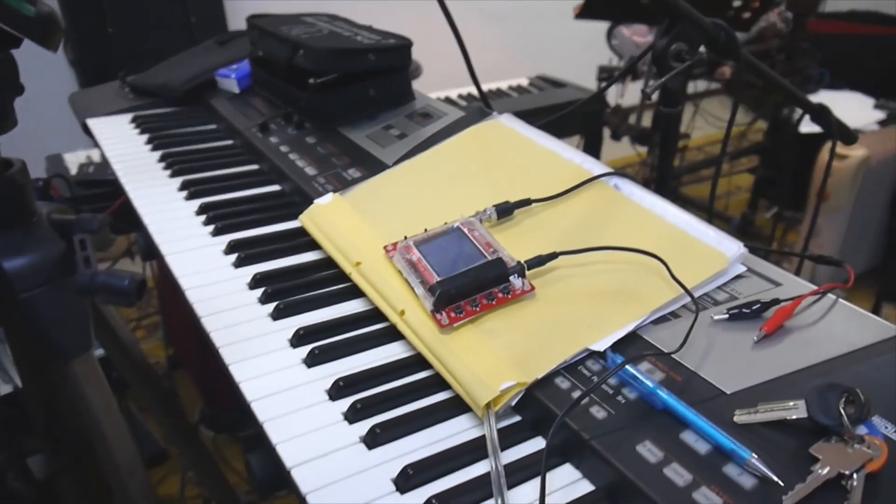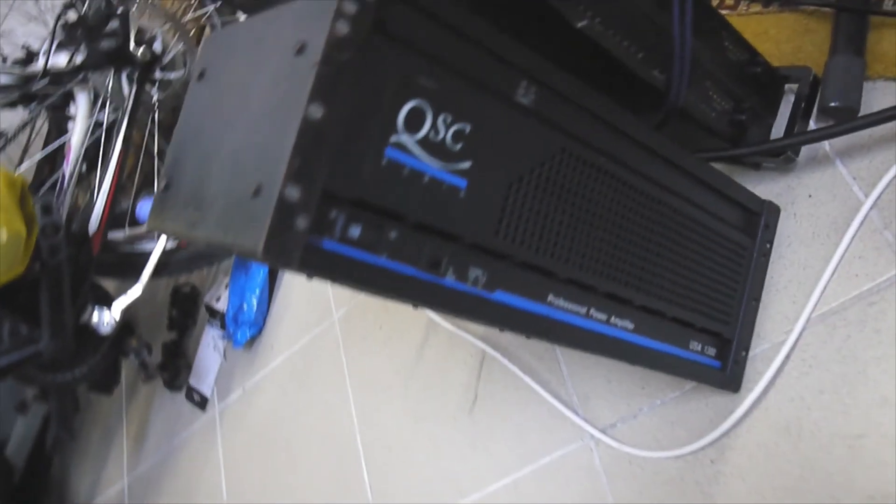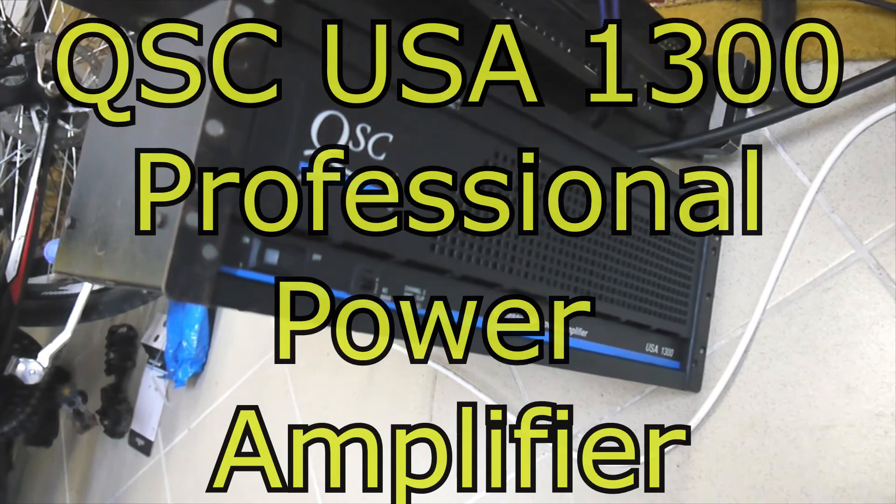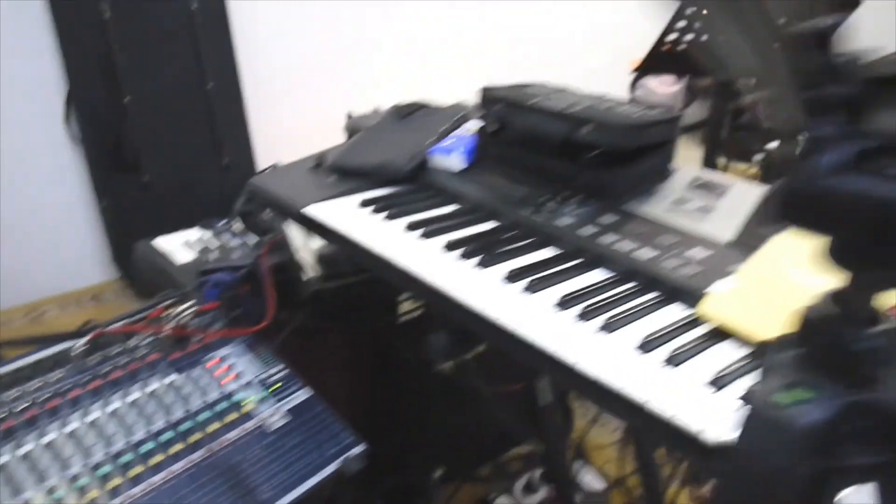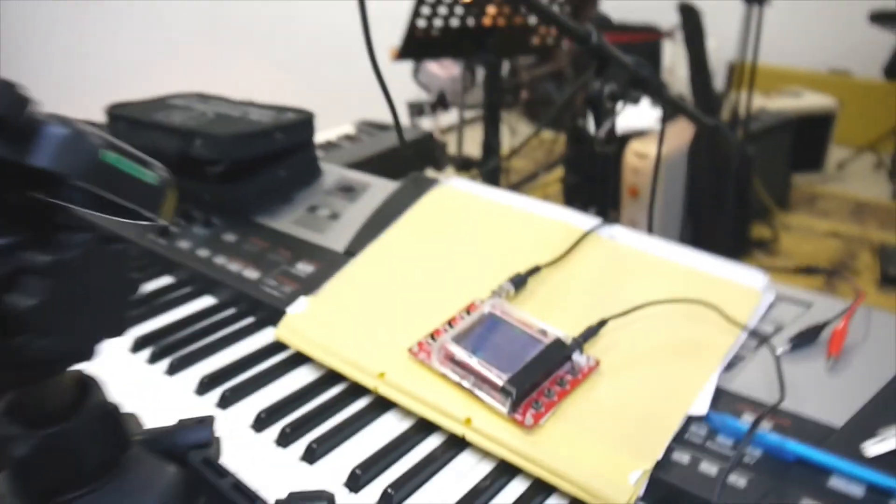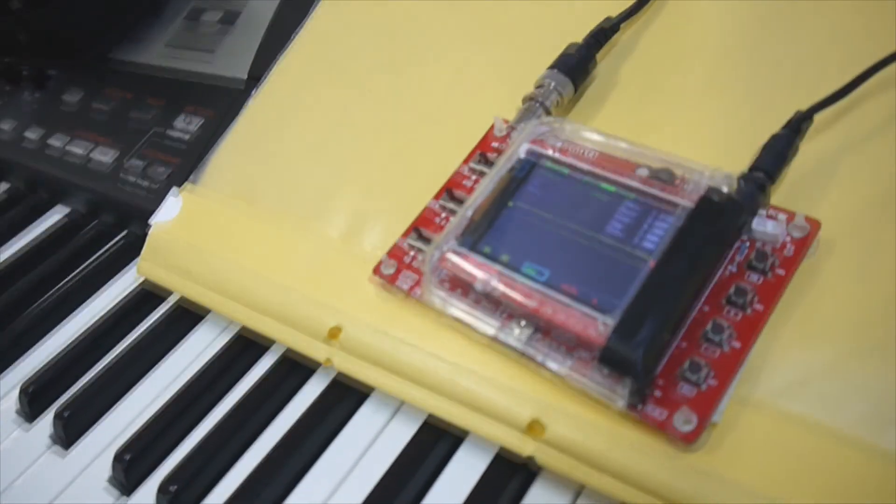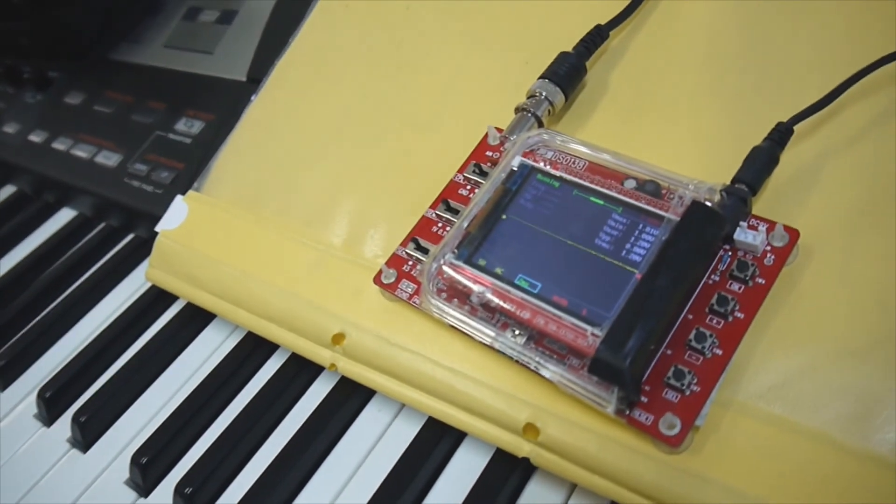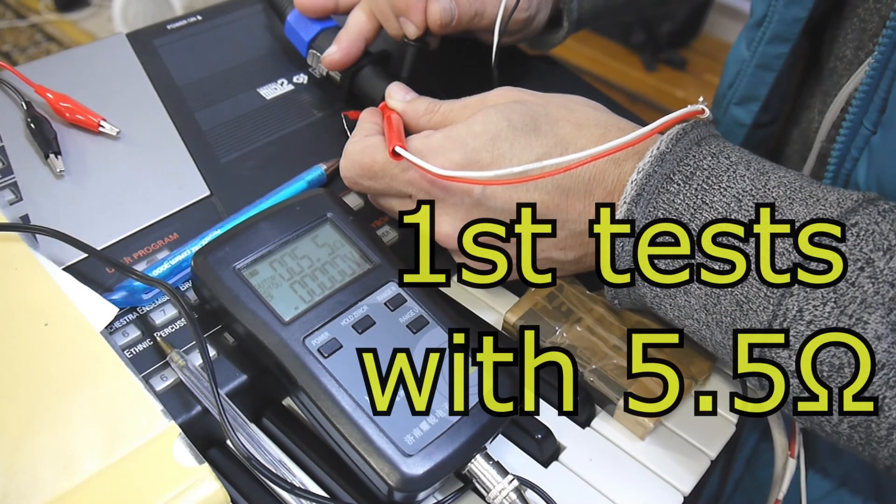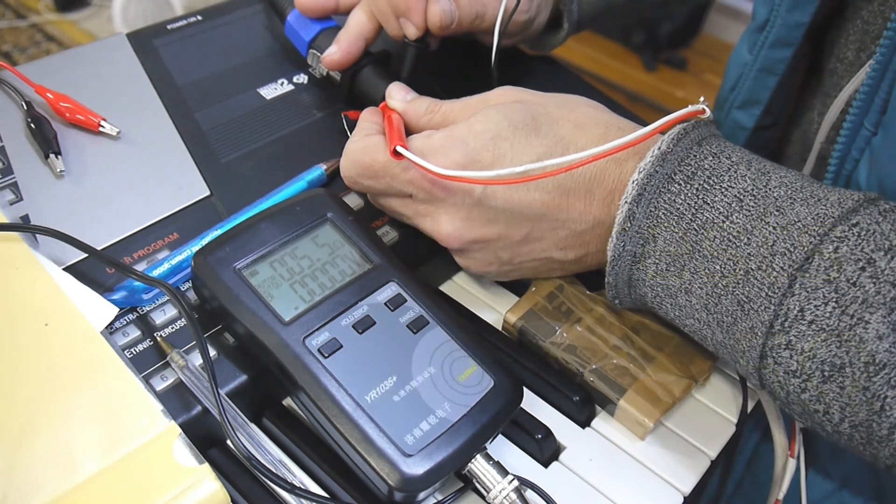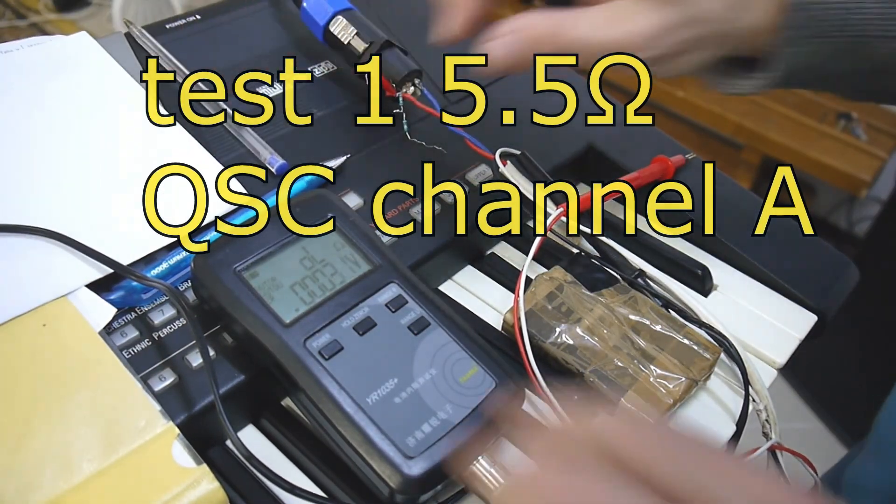Hello again, a new day, a new project. I want to have a dyno test, the power test for the QSC USA 1300 power amplifier. This is going to be a real life test with real loudspeakers, no dummy loads or anything else. I'm going to use this little oscilloscope to measure the RMS output from the amplifier. The first step is to check loudspeaker impedance, so we have 5.5 ohms.